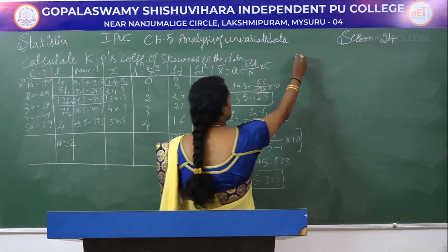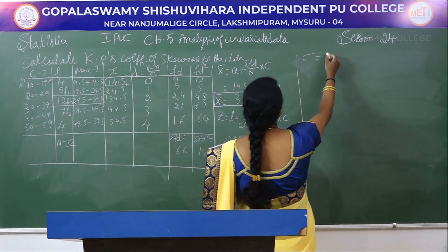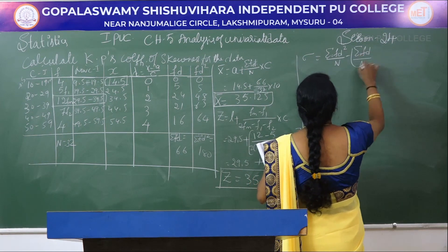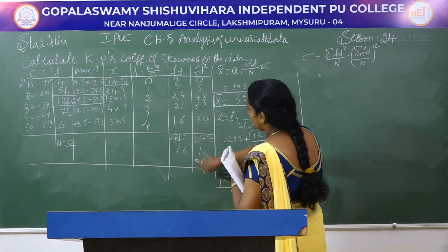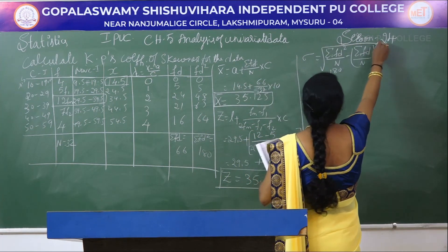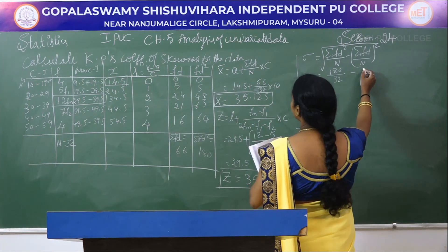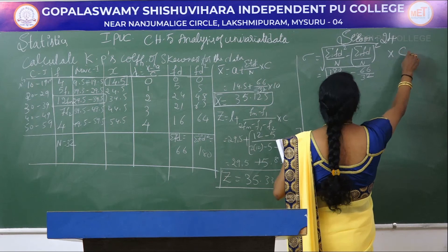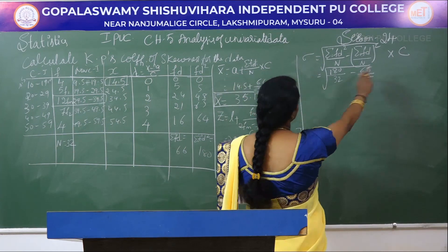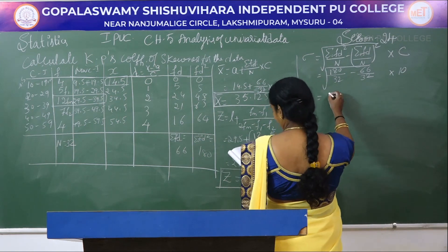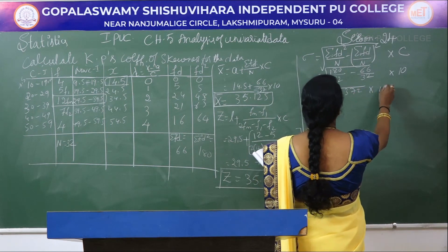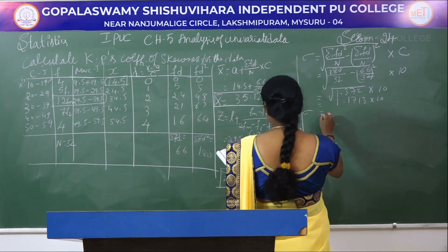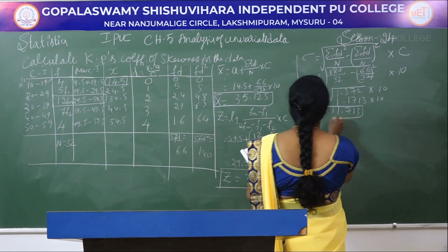Next, calculate standard deviation sigma. The formula using step deviation is: σ = √(Σfd²/n − (Σfd/n)²) × c = √(180/32 − (66/32)²) × 10 = √1.372 × 10 = 1.1713 × 10, so sigma = 11.713.